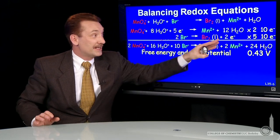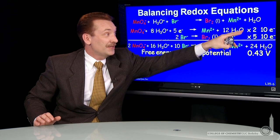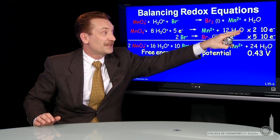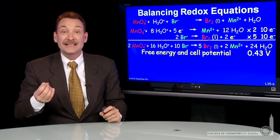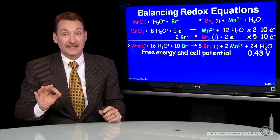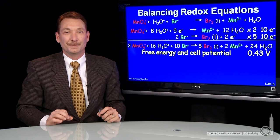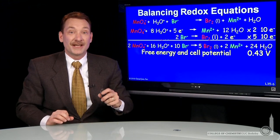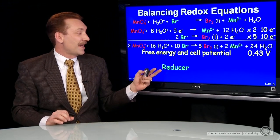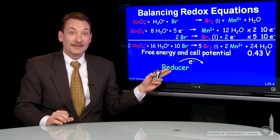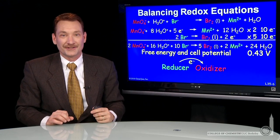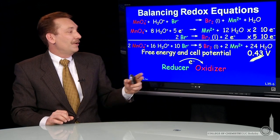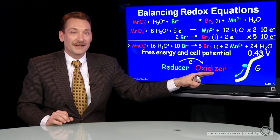Now, notice again, I didn't multiply my cell potentials, my standard reduction potentials, by two and five. That's because cell potential is an intensive property. It's independent of the extent of the system. I get a cell potential here. And I notice that that is a reducer transferring electrons to an oxidizer. That's downhill in free energy.